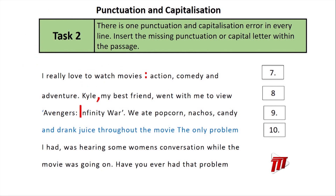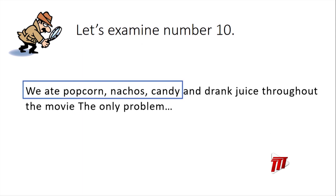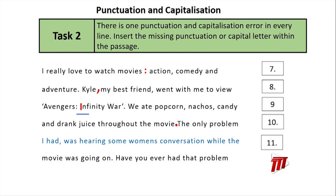Number ten: 'We ate popcorn, nachos, candy, and drank juice throughout the movie. The only problem...' There's a missing mark after 'movie' — it's a full stop. That sentence is complete, and a new sentence begins with 'The only problem.' Excellent work.